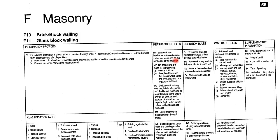Without using a standard book like the standard method of measurement, we may have quantities with very big variations. In order to have uniform results when taking off our measurement, we have to use SMM7. Of course, it has now been replaced by NRIM — that's the newest book we can use. But for the purpose of our lessons that we will be conducting, we will be using the SMM7 until the time when it becomes appropriate to change to the new NRIM book.